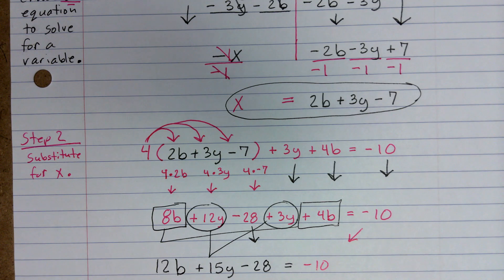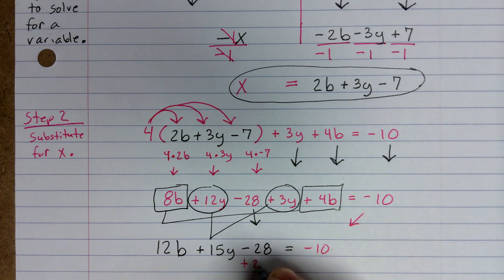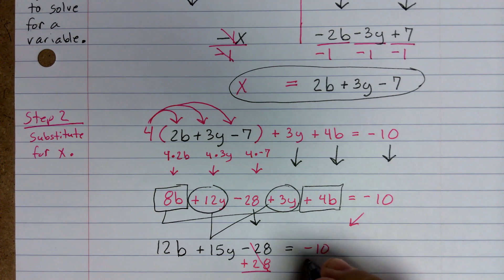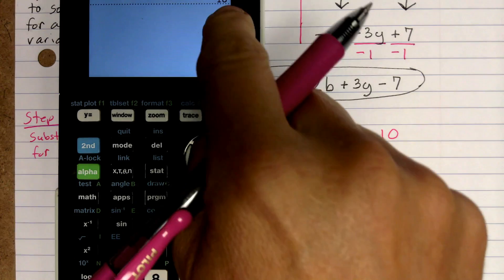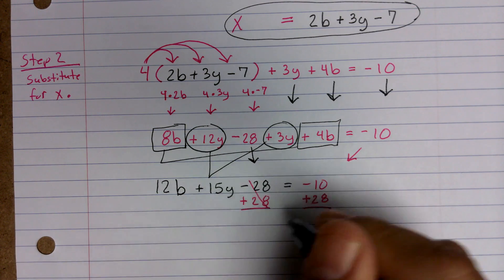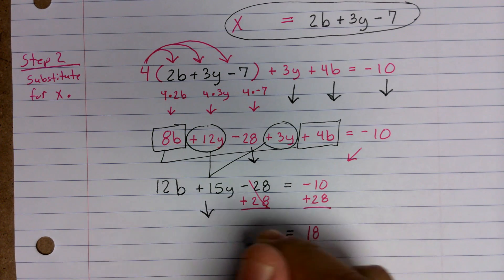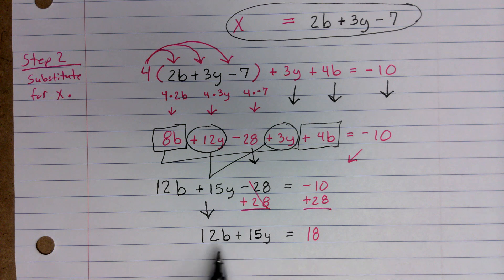We're almost ready to use this. I need to move the negative 28 over to the other side, so I add 28 to both sides. That zeros out the 28 on the left, and negative 10 plus 28 gives me 18. So now we have 12B plus 15Y equals 18. Notice we now just have two variables — that's important.